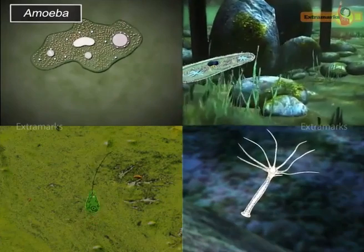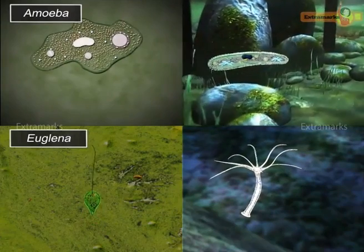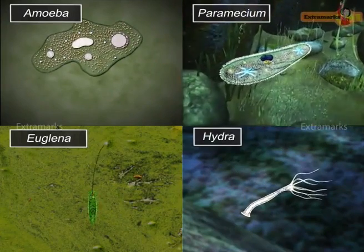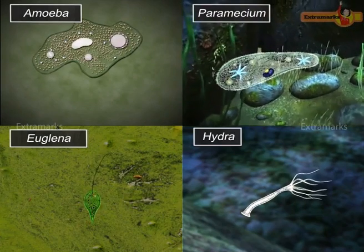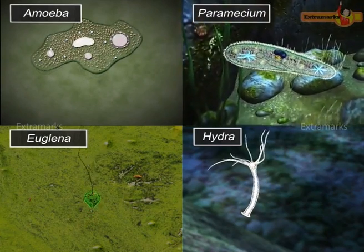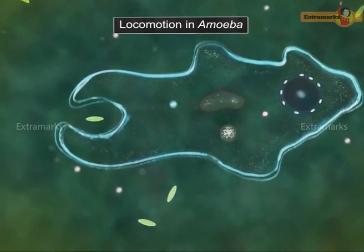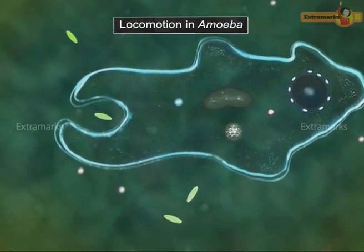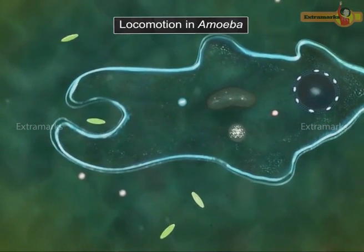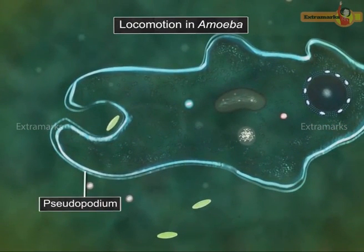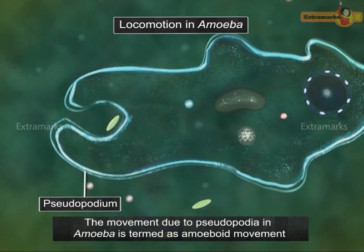Microorganisms like amoeba, euglena, paramecium, and hydra show various simple modes of locomotion. Locomotion in the unicellular organism amoeba is affected by the formation of temporary finger-like processes called pseudopodia. The movement due to pseudopodia in amoeba is termed amoeboid movement.